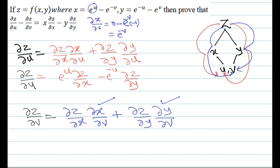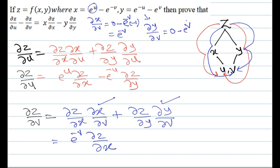Now we find ∂z/∂v. Differentiating x with respect to v gives e^(-v), so the first term is e^(-v) · (∂z/∂x). Differentiating y with respect to v gives 0 - e^v, so we get -e^v · (∂z/∂y).